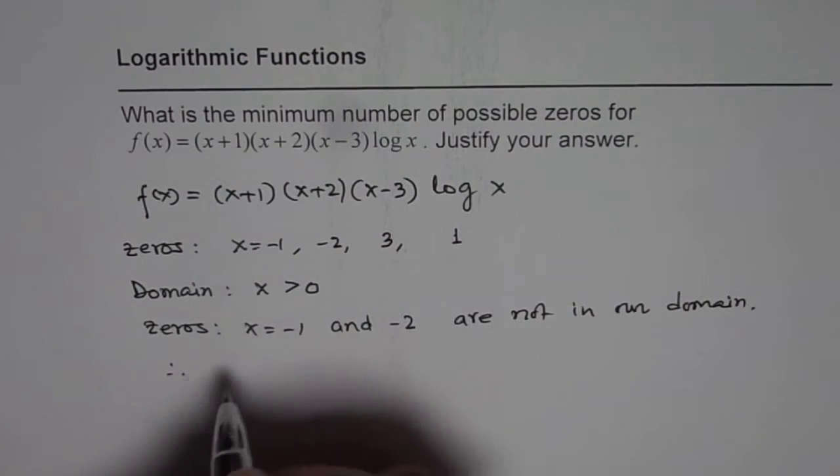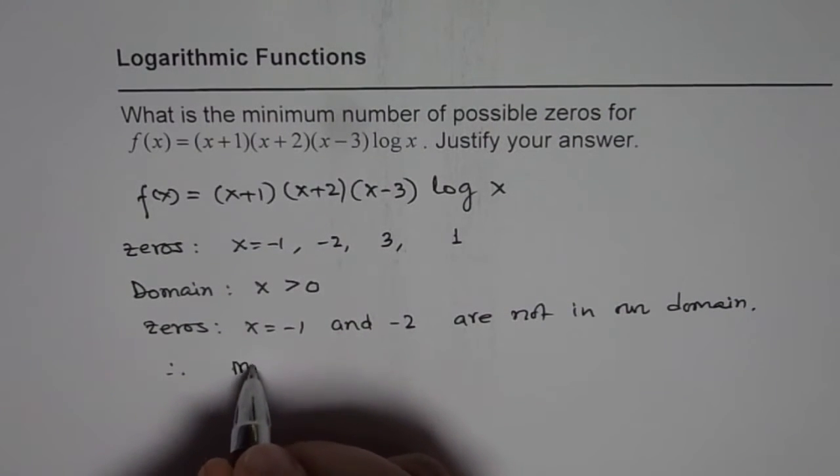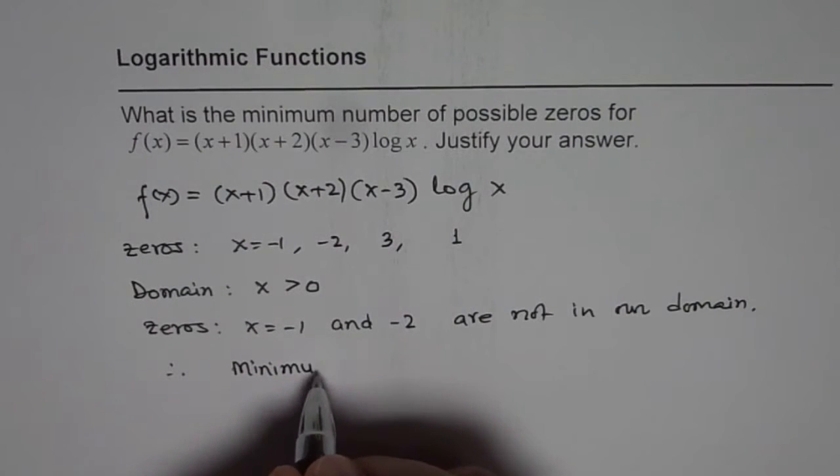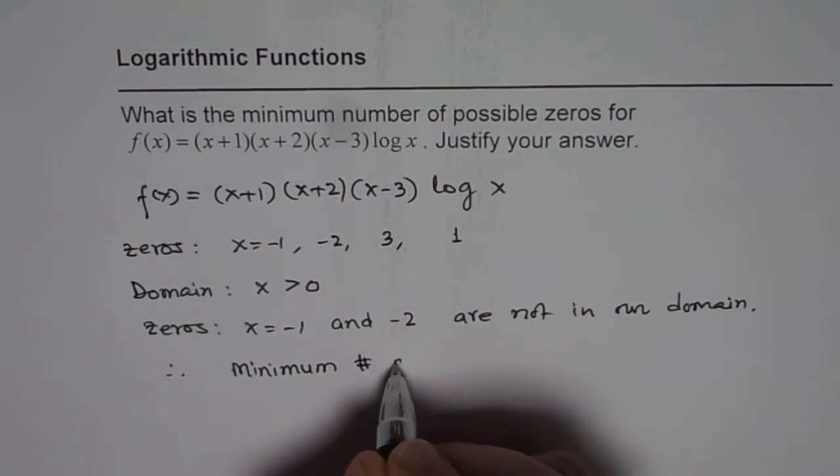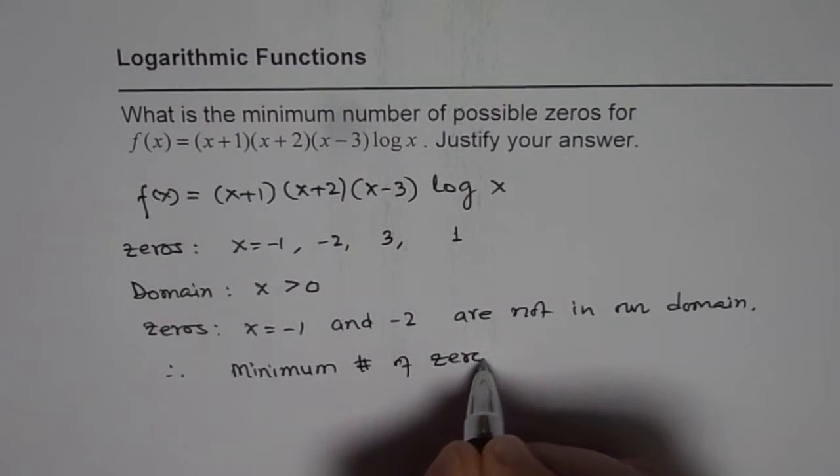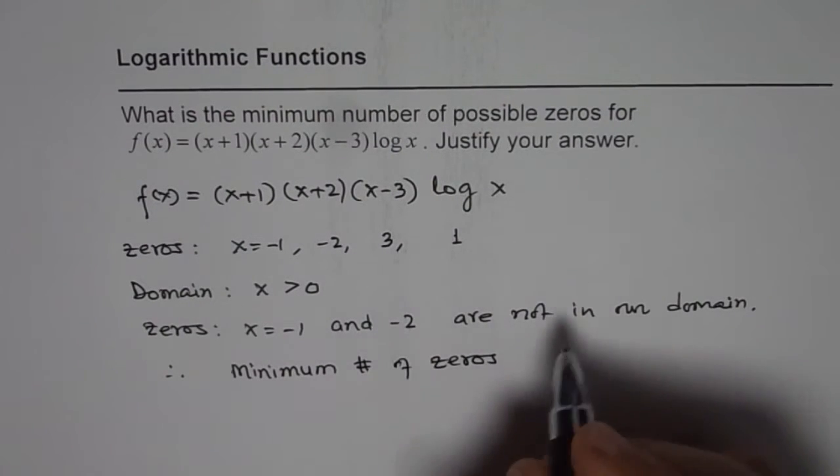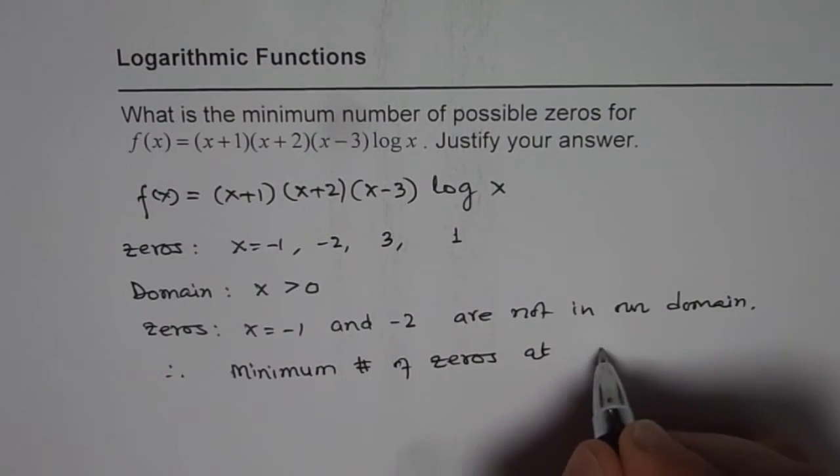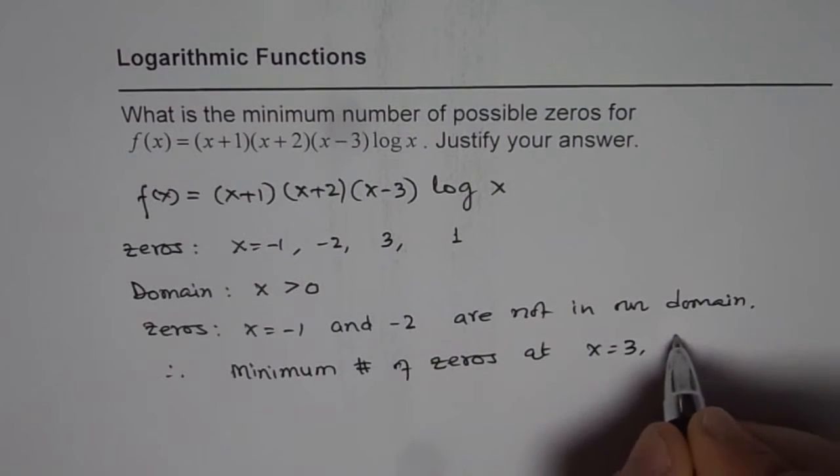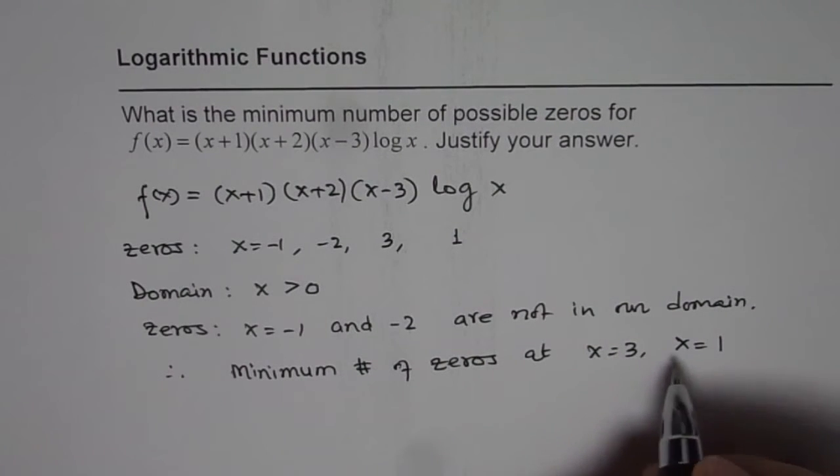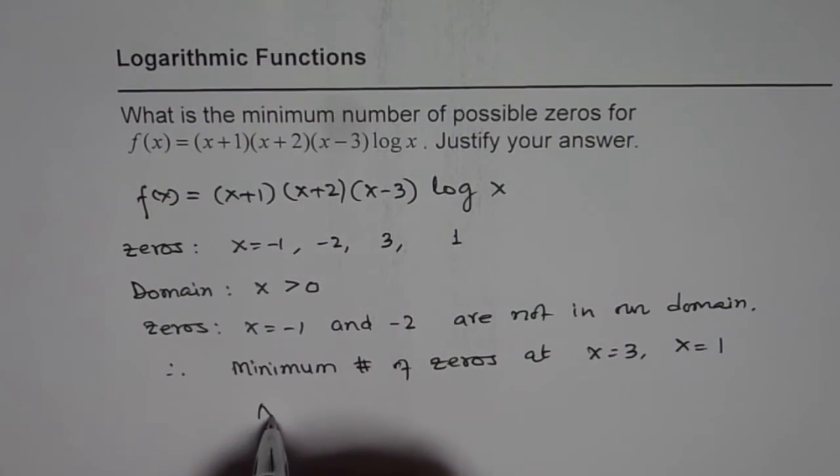And therefore, the minimum number of zeros for us will be 2, which are at x = 3 and at x = 1, right? So we are expecting minimum 2 zeros.